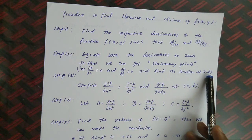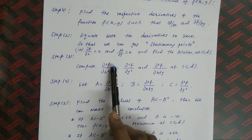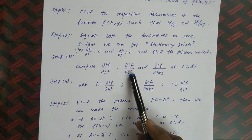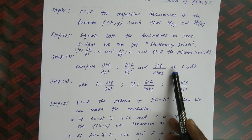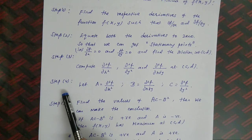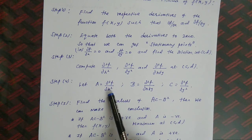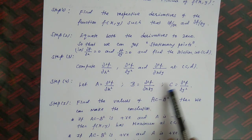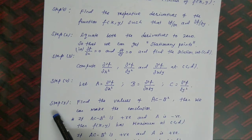Let the solution be the point (c, d). Step 3: Compute ∂²f/∂x², ∂²f/∂y², and ∂²f/∂x∂y at the point (c, d). Step 4: Let capital A = ∂²f/∂x², B = ∂²f/∂x∂y, and C = ∂²f/∂y².